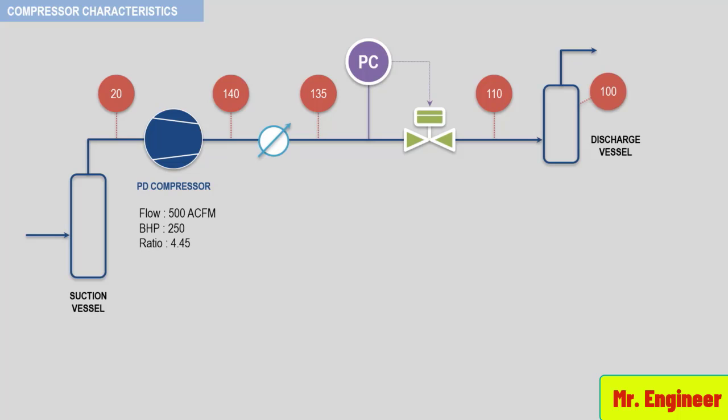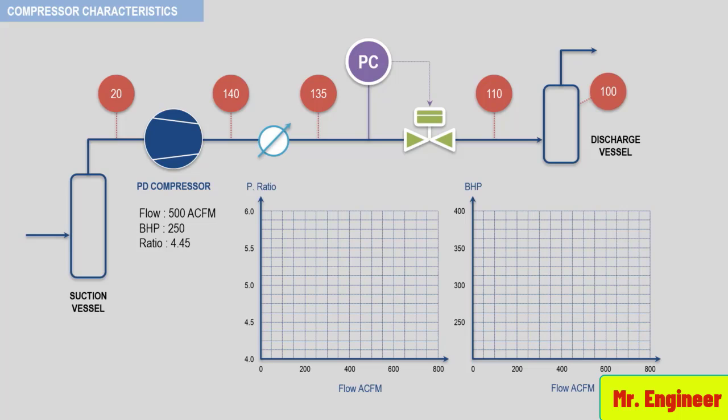Let's now plot the actual cubic feet per minute versus pressure ratio and the actual cubic feet per minute versus bhp. In this example, the actual cubic feet per minute is 500 and the pressure ratio is 4.45. So here you have your first operating point, and for bhp we have 500 ACFM as flow and 250 brake horsepower.